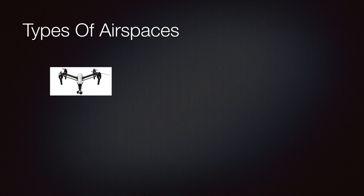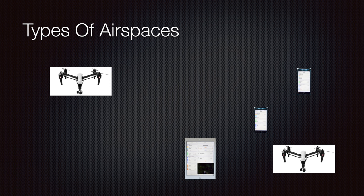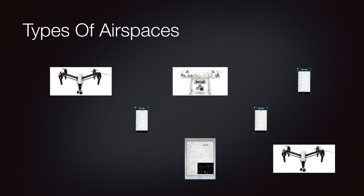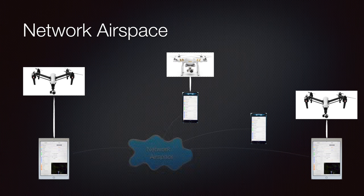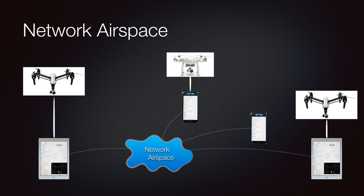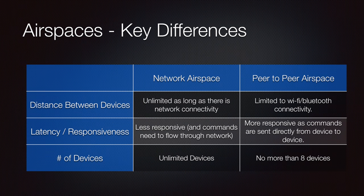Airspace is fully based upon the ability for devices and their connected quadcopters to communicate with each other. There are two types of Airspace that can be used: peer-to-peer and network. In a peer-to-peer Airspace, each device is connected via iOS's multi-peer network which uses infrastructure Wi-Fi networks, peer-to-peer Wi-Fi, and Bluetooth personal area networks. Peer-to-peer networks have limited connection range but offer lower latency and more timely information. In a network Airspace, your devices are connected through a network-based dedicated server — the benefit is no limitations on distance between devices, but you may have higher latency. Remember, when I say distance between devices, I'm talking about the iOS devices, not the quadcopters.